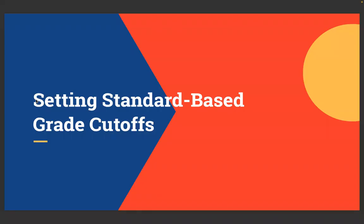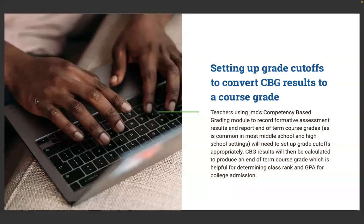Jumping right into it — setting standards-based grade cutoffs. Teachers using JMC's competency-based grading module to record formative assessment results and report end-of-term course grades, as is common in most middle and high school settings, will need to set up grade cutoffs appropriately. CBG results will then be calculated to produce an end-of-term course grade, helpful for determining class rank, GPA for college admission, honor roll status, and all the things you'd use traditional letter grades for.